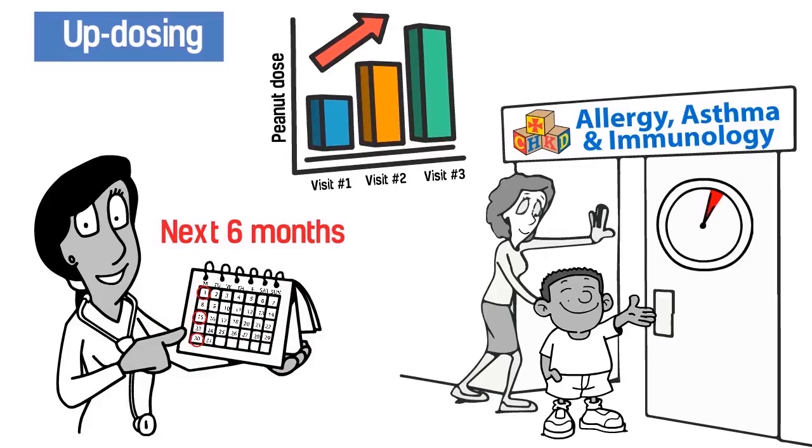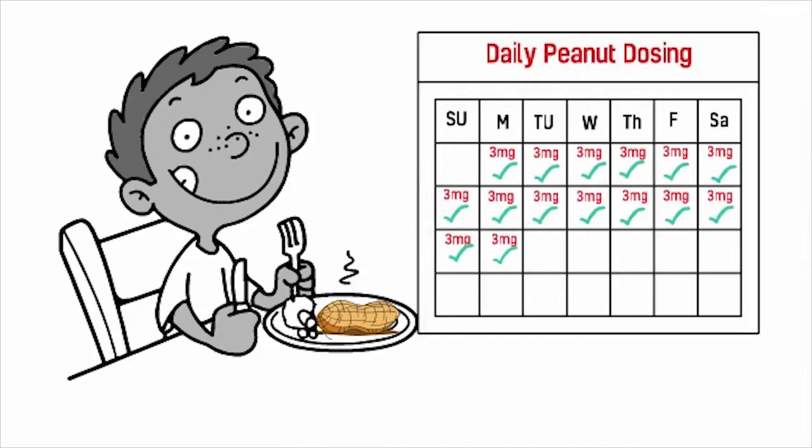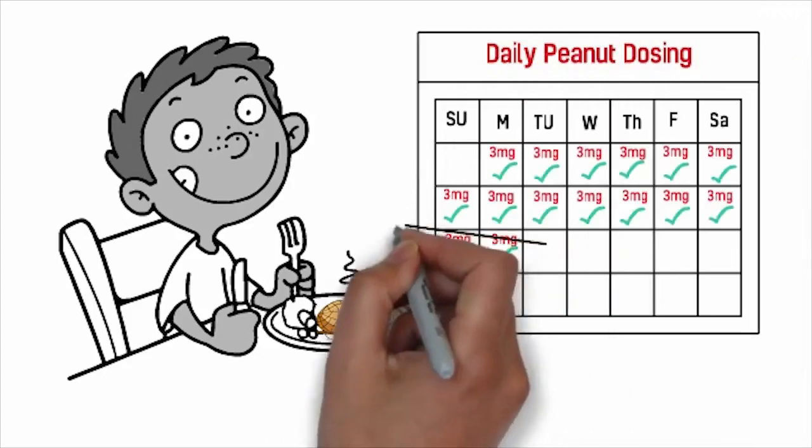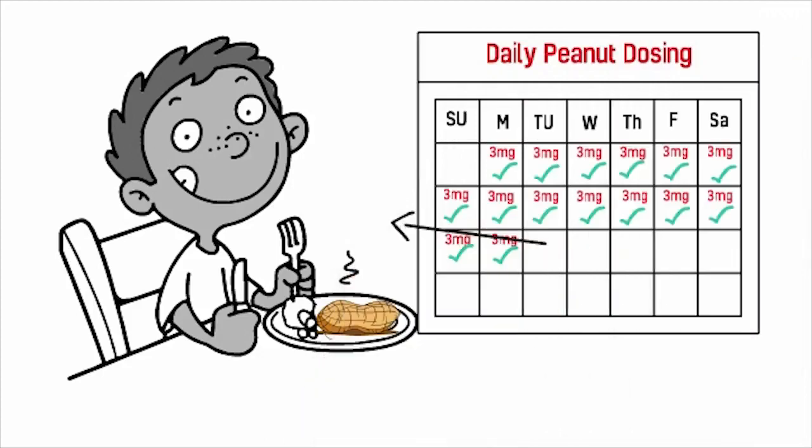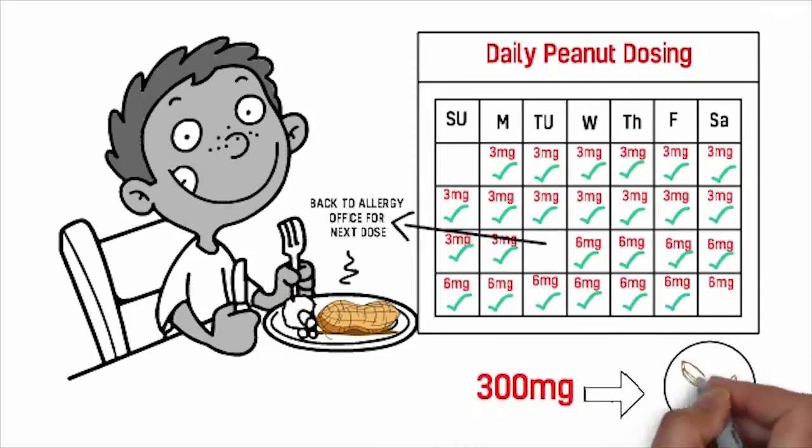After each successful office visit, your child must continue taking the new dose at home every day until the next updosing visit. This process repeats itself until your child safely builds up to the final dose – 300mg of peanut protein. This dose is equal to about one peanut kernel.